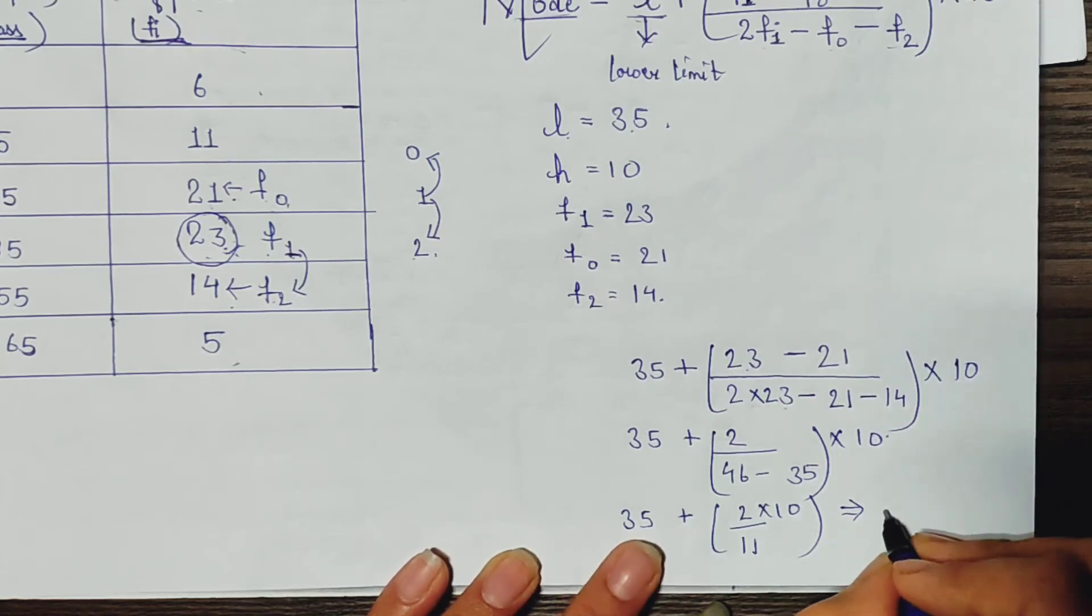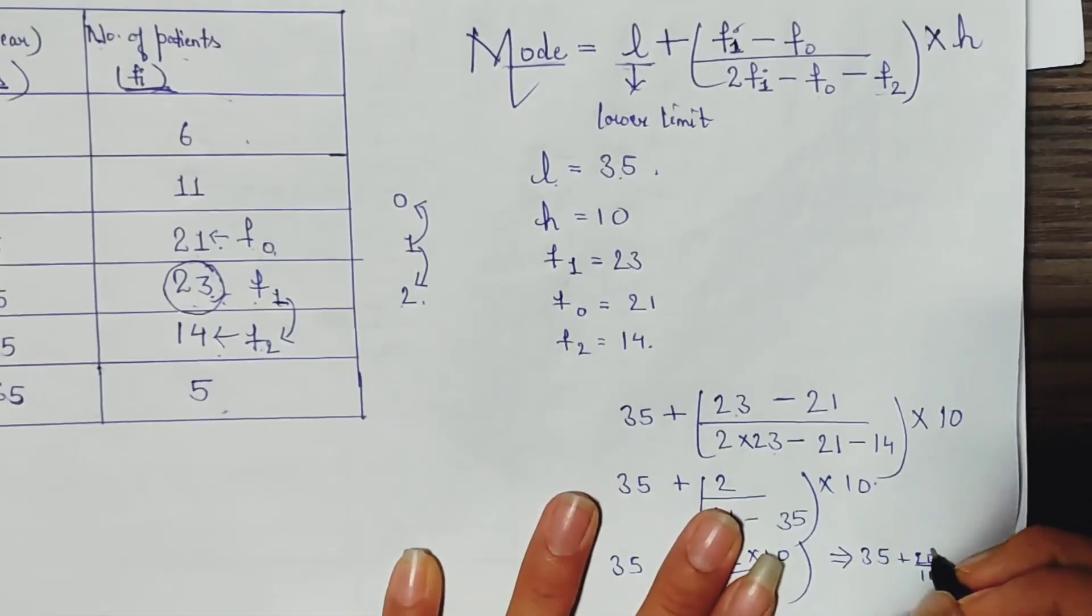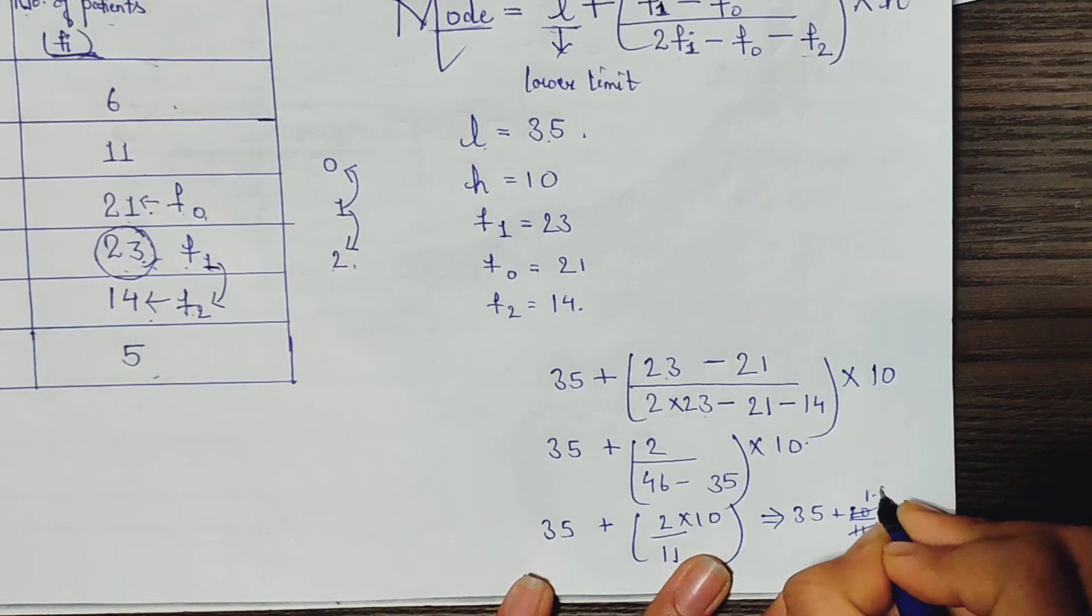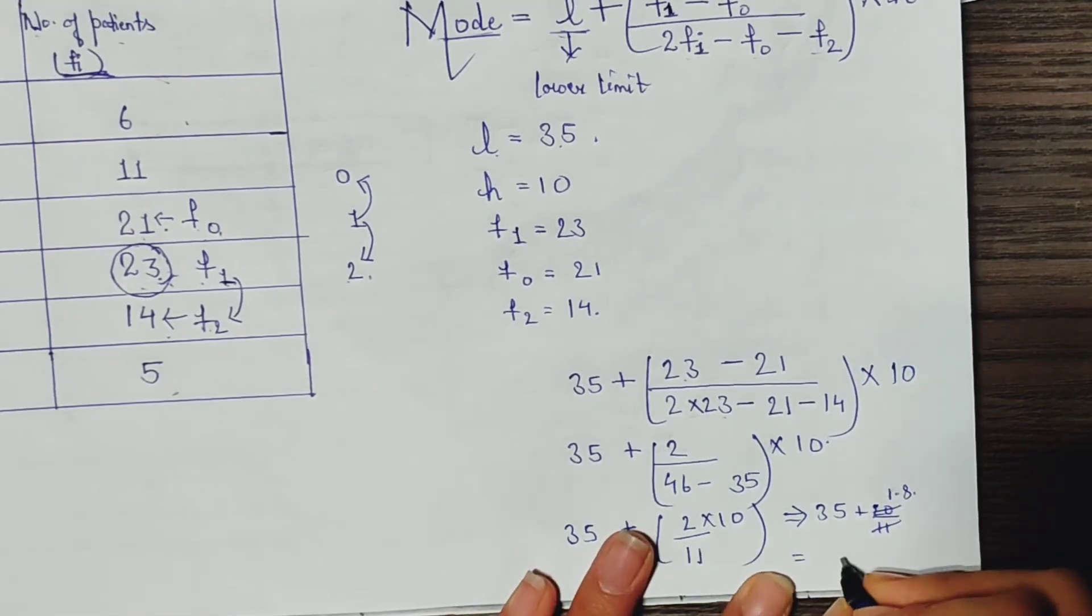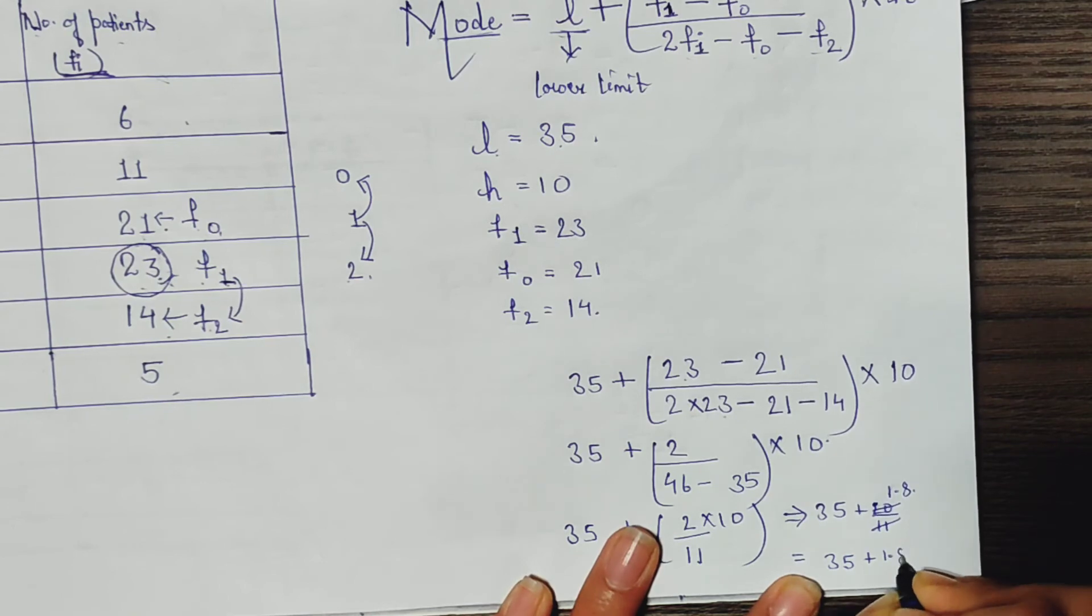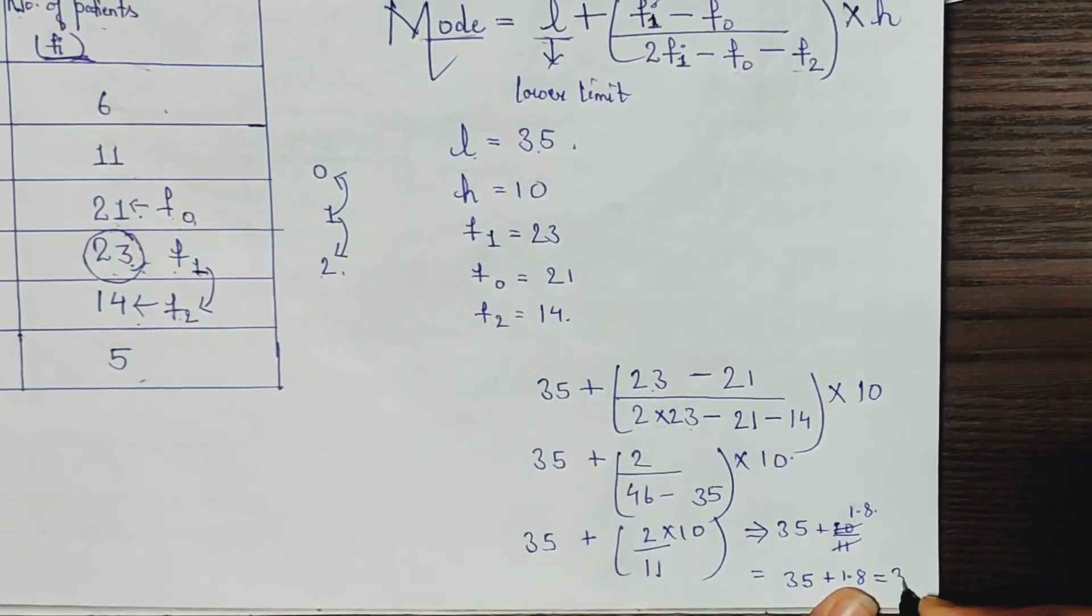That is 35 plus 2 divided by 11 into 10, that is 1.8. So the final value is 35 plus 1.8, which equals 36.8. Okay, 36.8 years. This is our mode value.